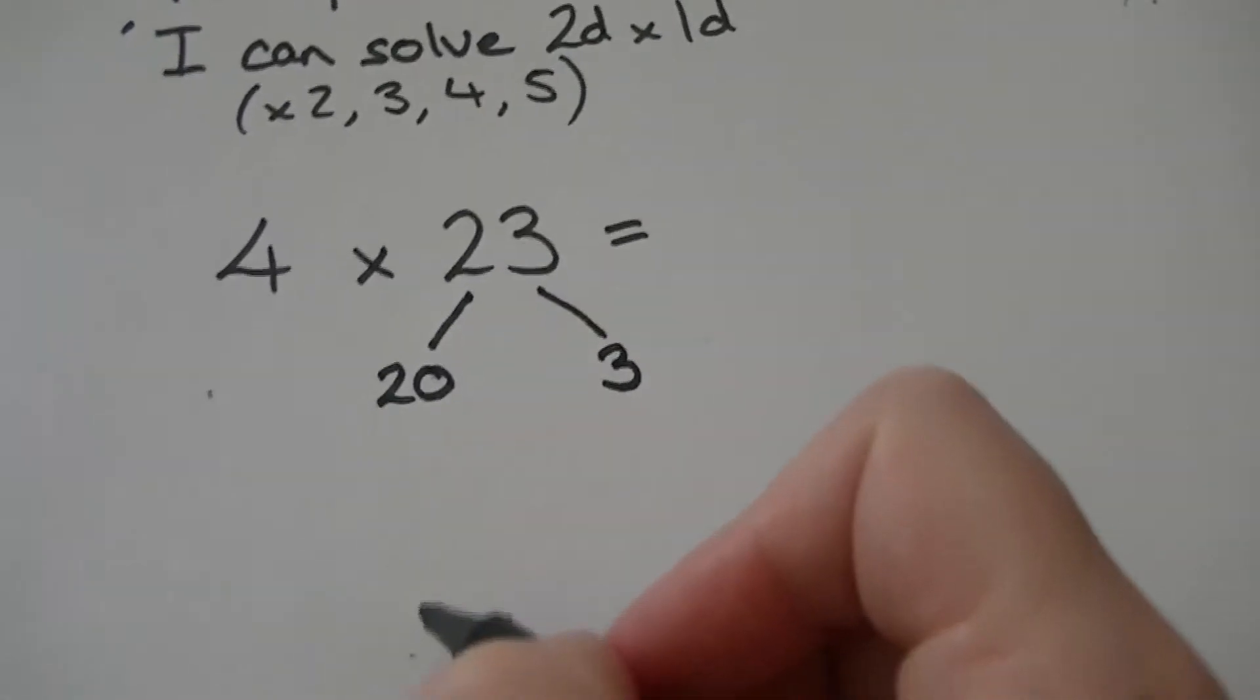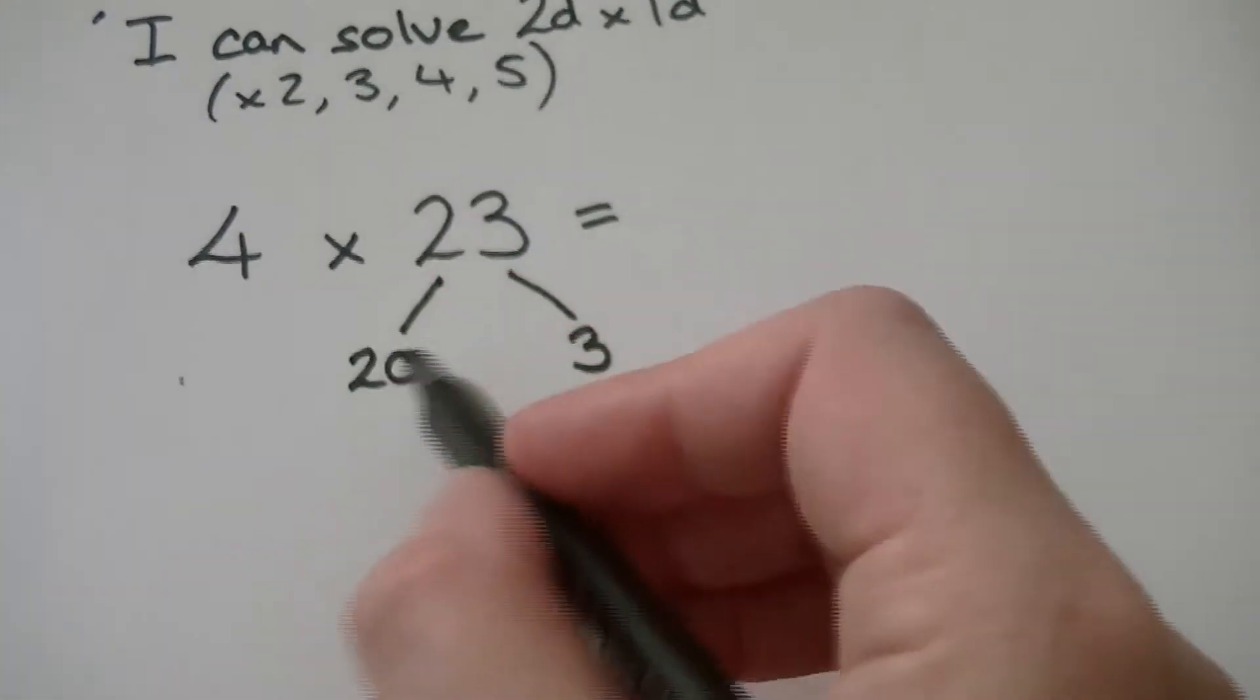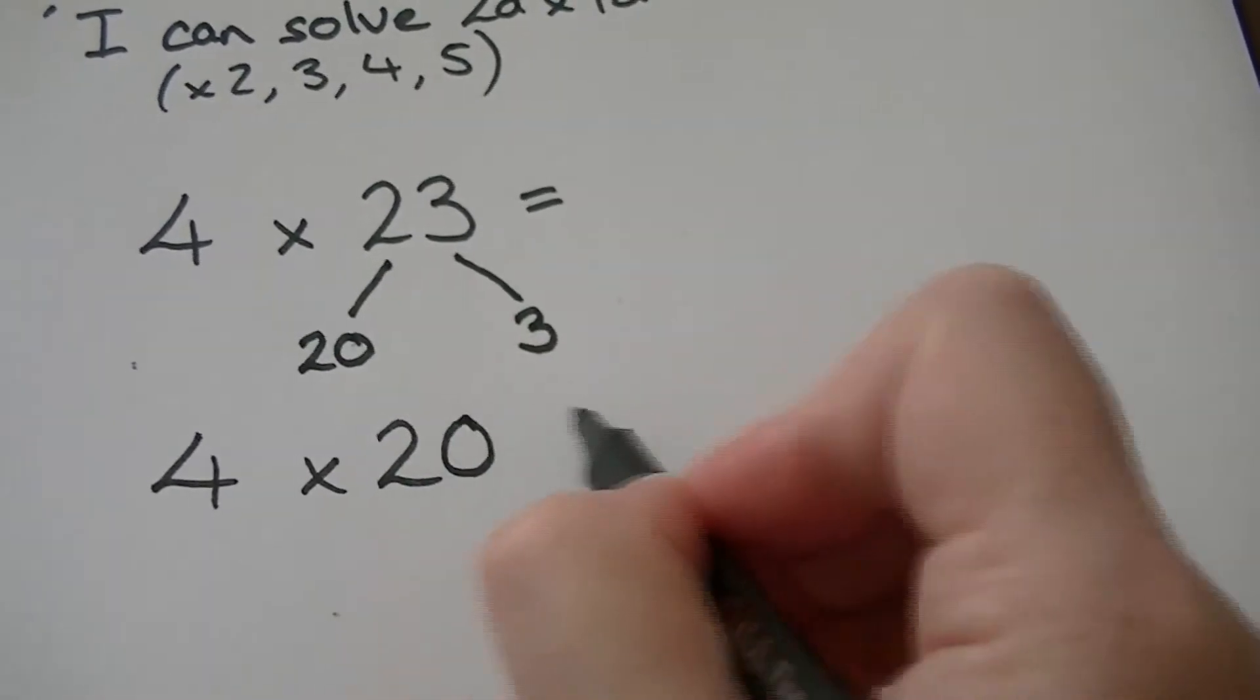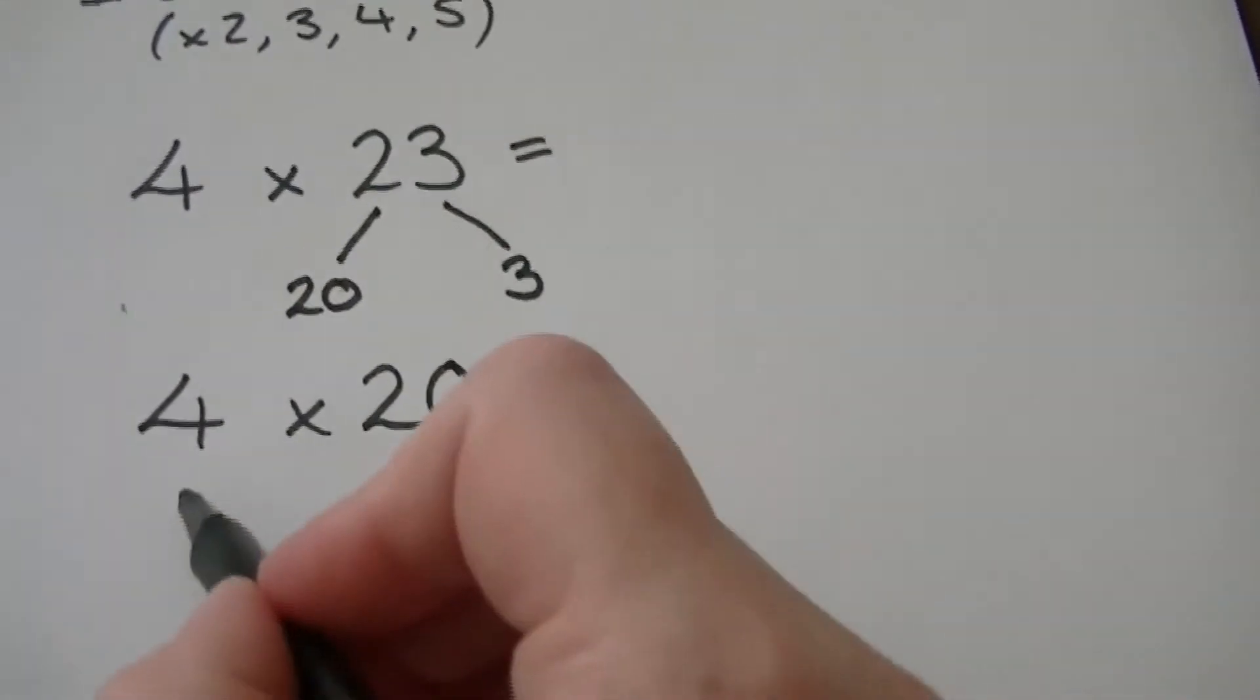So we've created two multiplications. We've got 4 times 20 and 4 times 3.